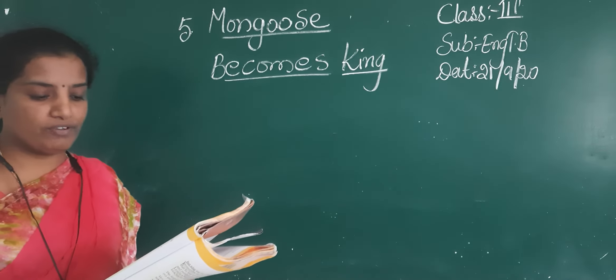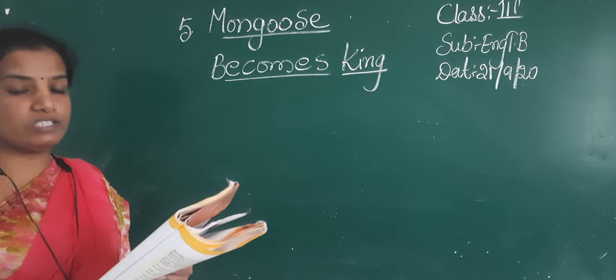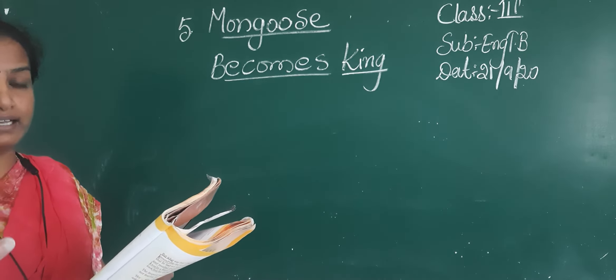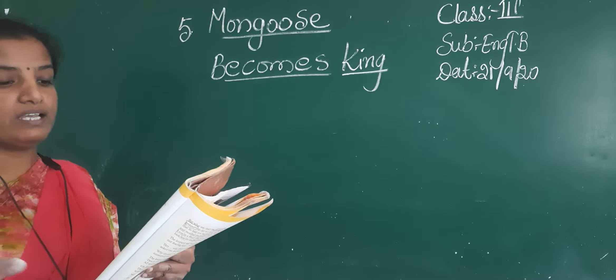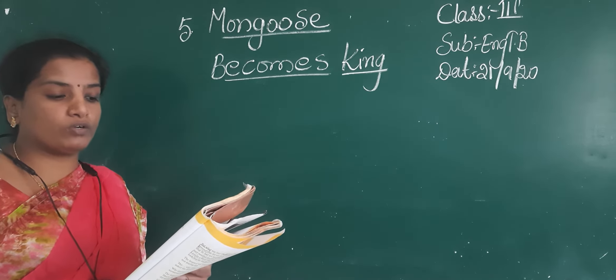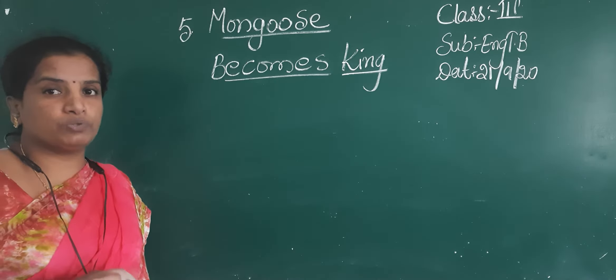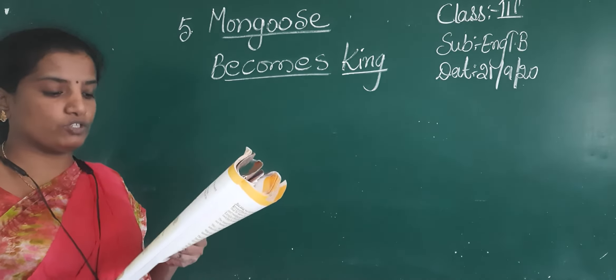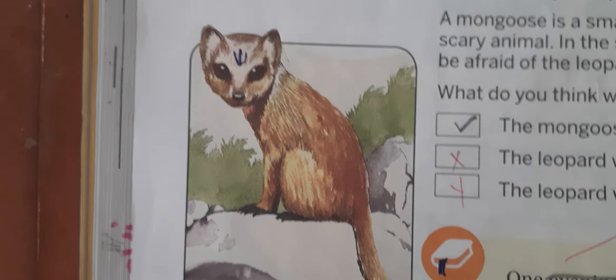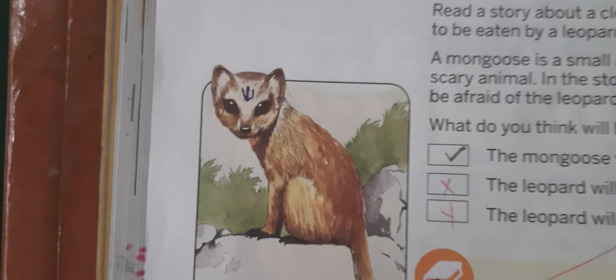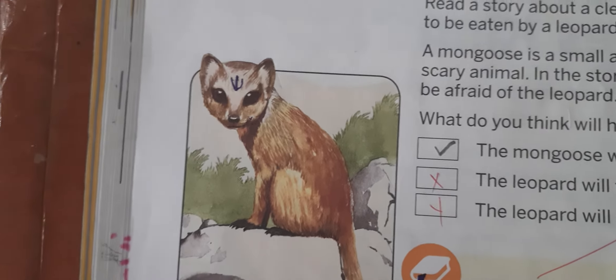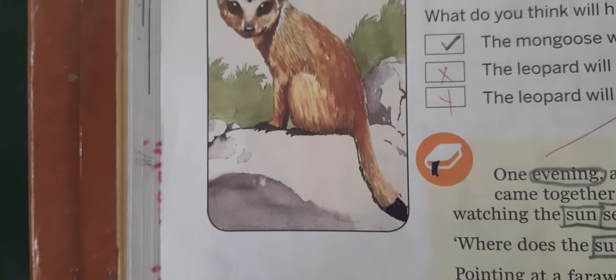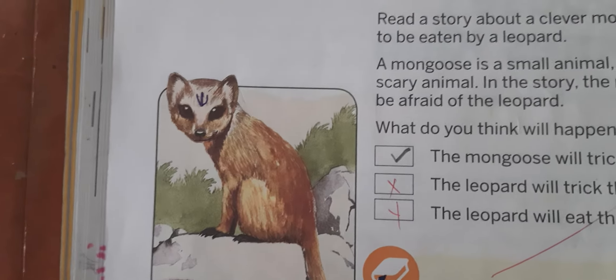Lesson page number 58. One evening. Now see, a mongoose is a small animal and a leopard is a big scary animal. In the story, the mongoose decides not to be afraid of the leopard. See, this is the animal, mongoose animal. Can you see it clearly? If you did not have a textbook, once have a look. This is the mongoose animal. Okay? Now see children.